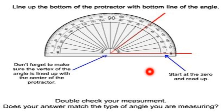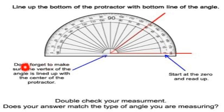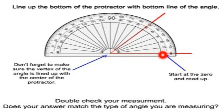Points to remember when using a protractor: line up the bottom of the protractor with the bottom arm of the angle; ensure the vertex of the angle is lined up with the center of the protractor; always start at 0 and move upward; and always double-check your measurement.